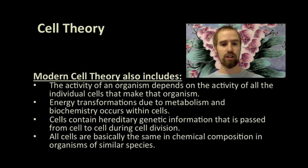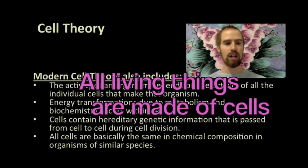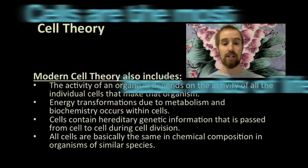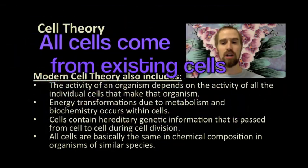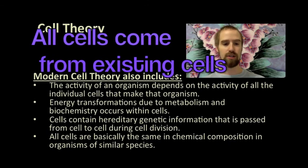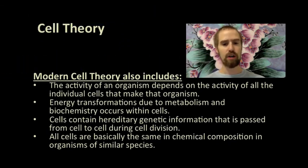The original version of cell theory contained the three points we've already discussed, that all living things are made of cells, that cells are the basic units of structure and function in living things, and that all cells arise from other cells. But modern cell theory goes farther still.